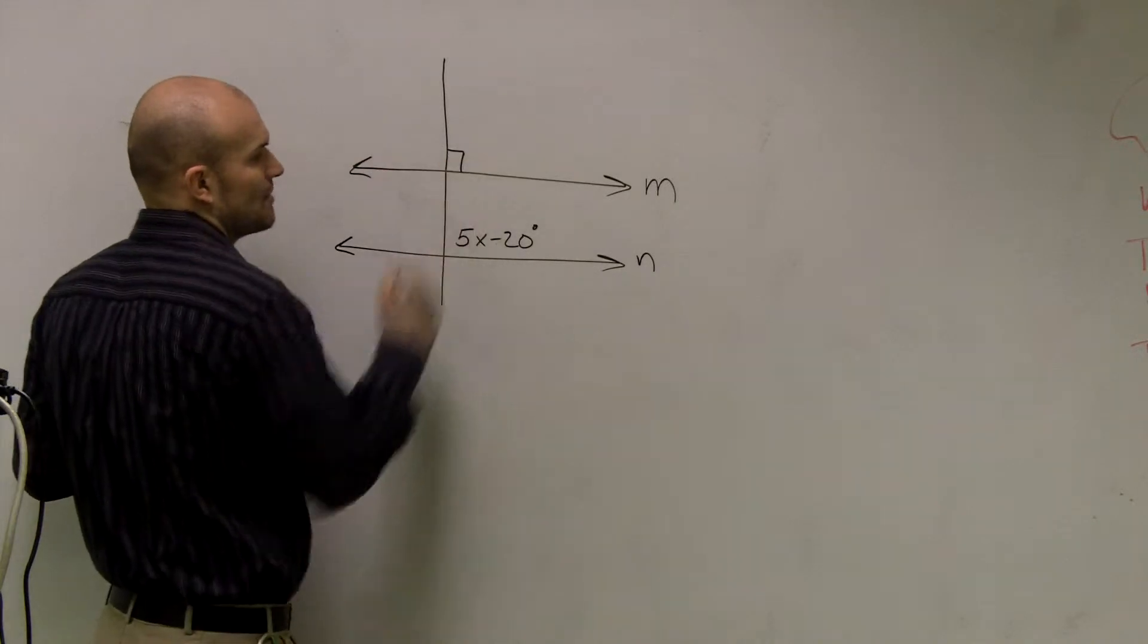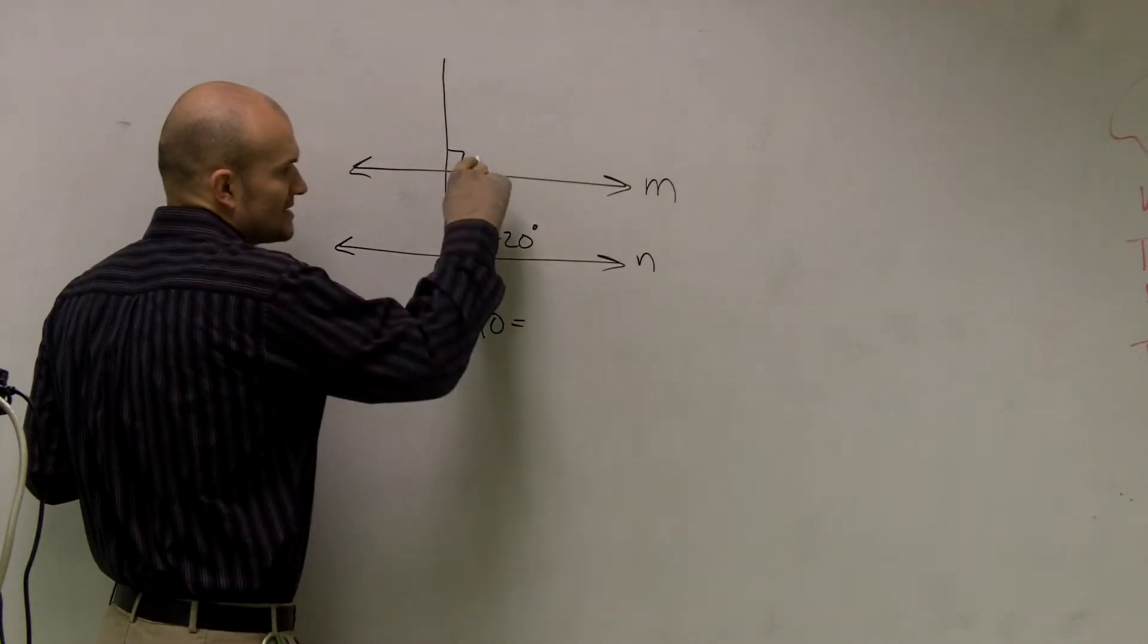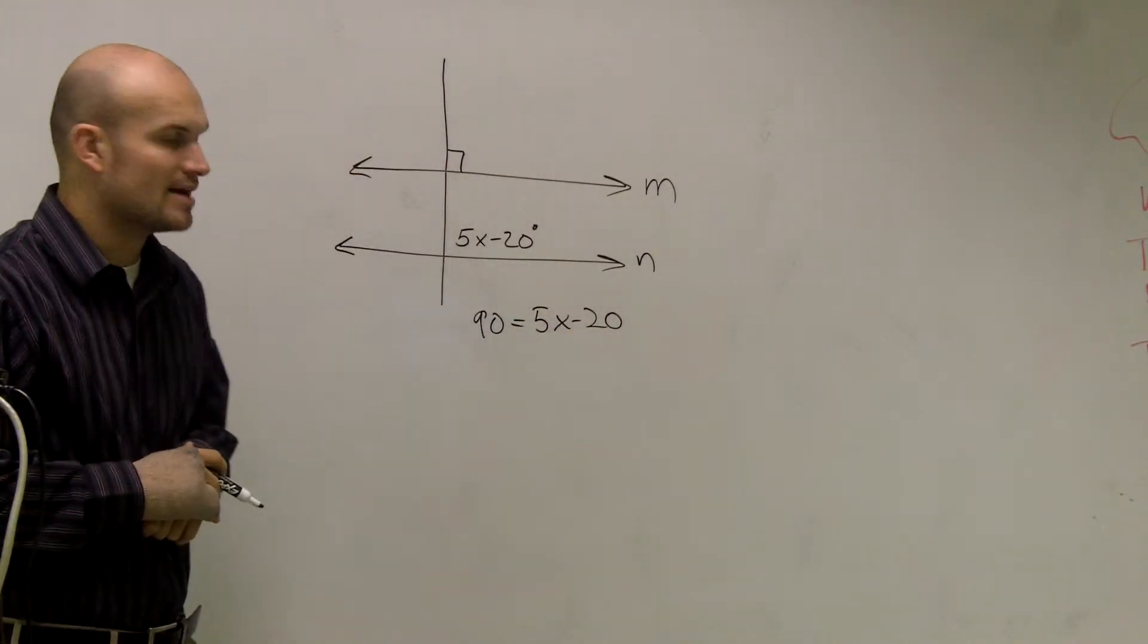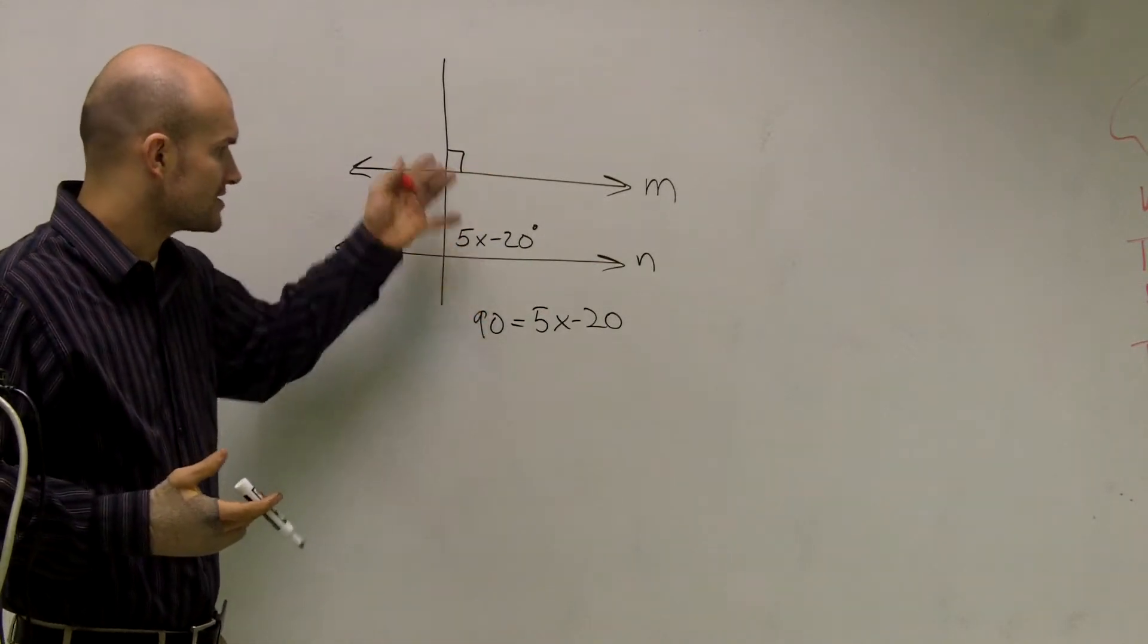So what I'm going to do is this represents 90 degrees. So if I say 90 degrees, this angle is the same thing as 5x minus 20, therefore then I will have parallel lines. So I need to determine what angle is going to work for this.